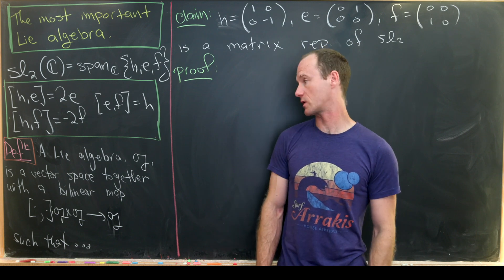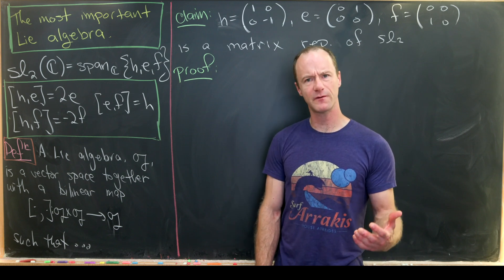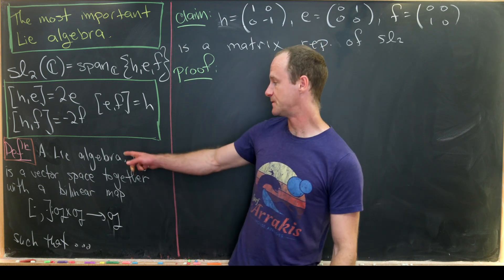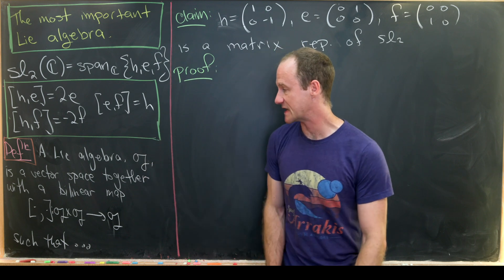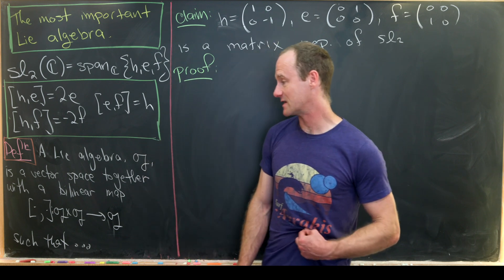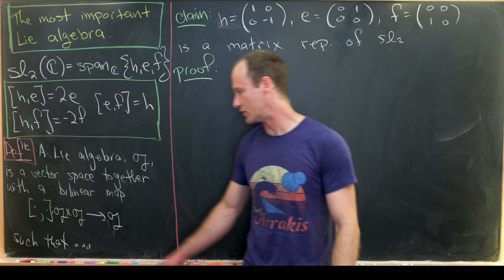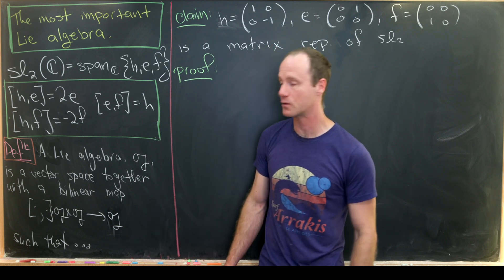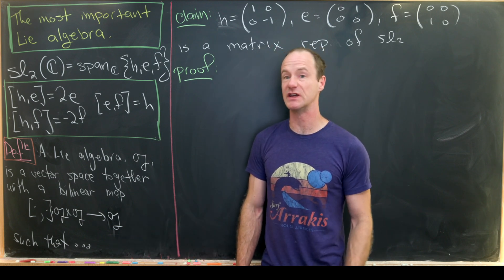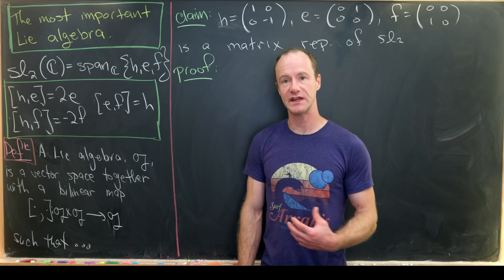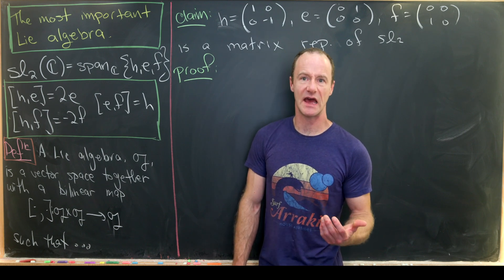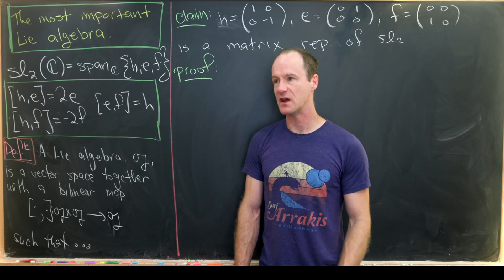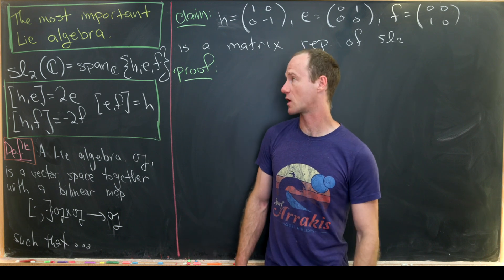Today we're going to look at probably the most important Lie algebra, but before we really get started let's recall a little bit about what a Lie algebra is. A Lie algebra G is a vector space together with a bilinear map, usually denoted by a bracket, taking two inputs from G and giving an output from G. It satisfies conditions like skew symmetry — x bracket y equals minus y bracket x — and the Jacobi identity.